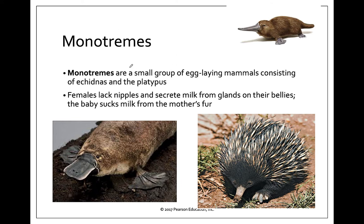The monotremes are a really small group. There are four species of echidna and only one species of platypus. These actually lay eggs. What happens though, once the eggs hatch, is that the babies suckle milk from the mother. These don't actually have nipples, so instead they have milk-secreting glands covered in fur on the bottom of the body, and the fur collects the milk. The babies suckle the milk off of the fur rather than off of a nipple.